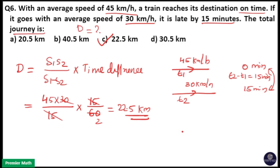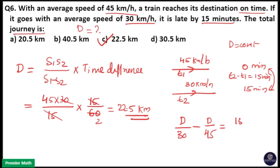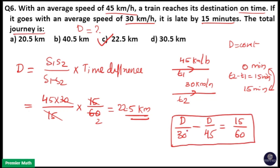This formula is derived from T2 minus T1 equals 15 minutes. That is, T2 equals distance divided by speed of the second case, which is 30, minus T1 equals distance divided by 45, and that equals 15 minutes difference, that is 15 by 60. If you solve this, you will get the formula: distance equals S1 times S2 divided by S1 minus S2, multiplied by the time difference. This is the actual derivation, and when you solve it you get this formula.